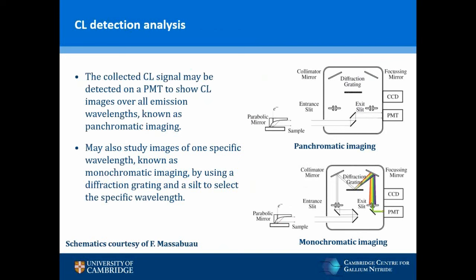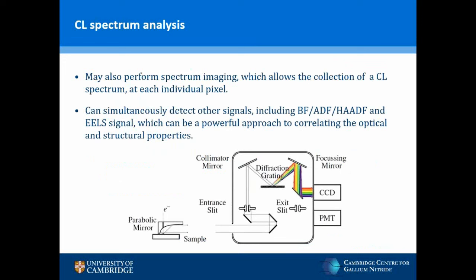The cathodoluminescent signal may be directly detected on a photomultiplier tube to give a CL intensity image over all emission wavelengths — known as panchromatic imaging. The CL intensity image may also reflect just one emission wavelength, known as monochromatic imaging, by using a diffraction grating to disperse the light and a slit to select the desired wavelength. The CL spectrum may also be recorded by dispersing the signal and detecting on a CCD camera, with spectrum images collected over a range of points to provide a 3D dataset. Simultaneously, other signals may be collected, including bright field, annular dark field, high-angle annular dark field STEM signals, as well as the EELS signal.